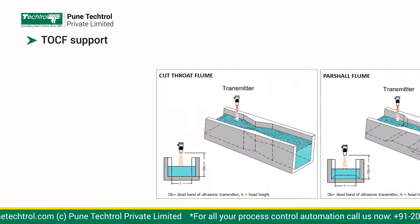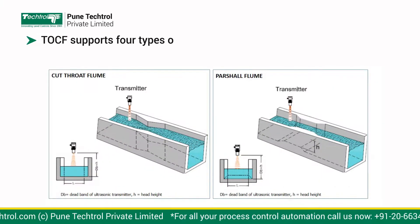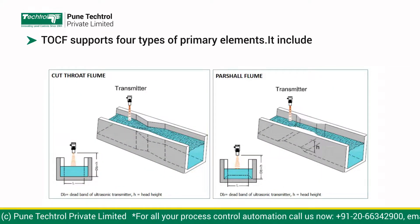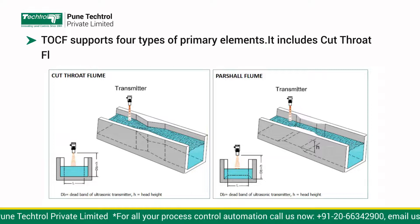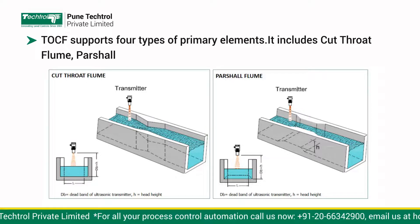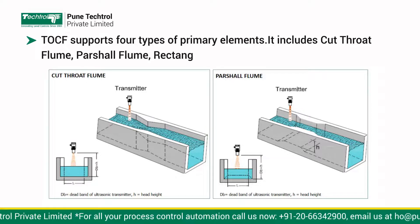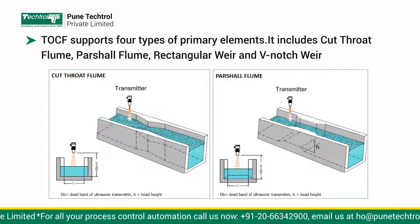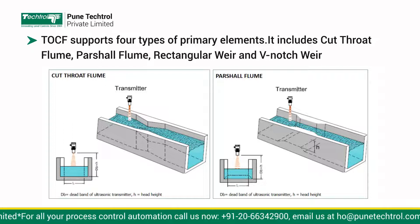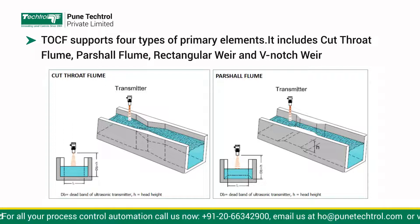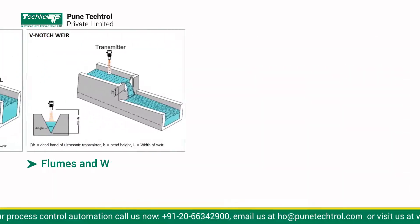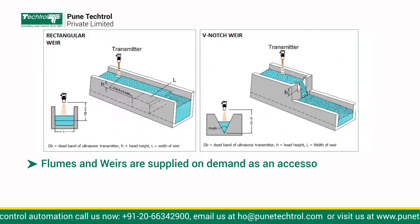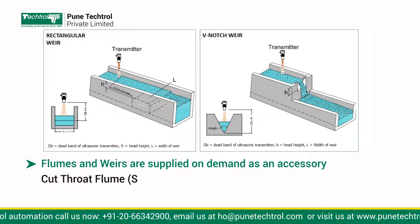The system supports four types of primary elements: cut-throat flume, parshall flume, rectangular weir, and weir. Flumes and weirs are supplied on demand as an accessory.